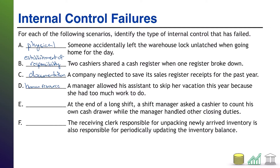E — at the end of a long shift, a shift manager asked a cashier to count his own cash drawer while the manager handled other closing duties. This is a failure in independent internal verification. What should have happened here is that the shift manager counts the drawer while the cashier watches, or the cashier counts the drawer while the shift manager is watching — basically one of them should count and the other should verify the count separately to make sure they are both in agreement with what's in there.